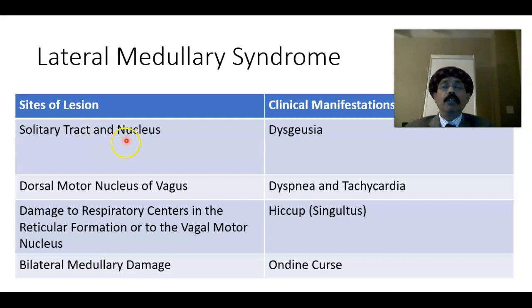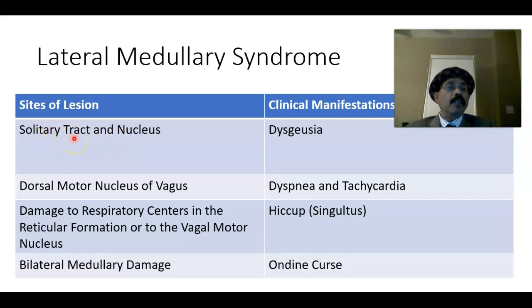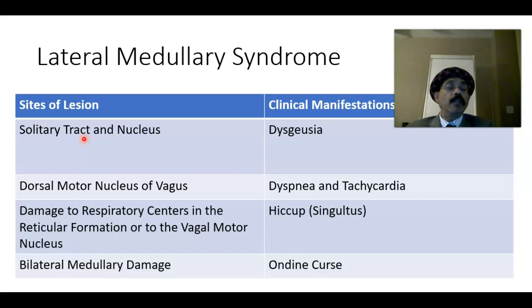The solitary tract and nucleus may also be involved. The solitary tract is associated with the seventh, ninth, and tenth cranial nerves, carrying taste sensation and general sensation. In lateral medullary syndrome, this leads to dysgeusia — an altered sense of taste. Taste from the anterior two-thirds of the tongue is carried by the chorda tympani branch of the facial nerve; from the posterior one-third by the glossopharyngeal nerve; and from the extreme posterior tongue by the vagus nerve — all going through the solitary tract.